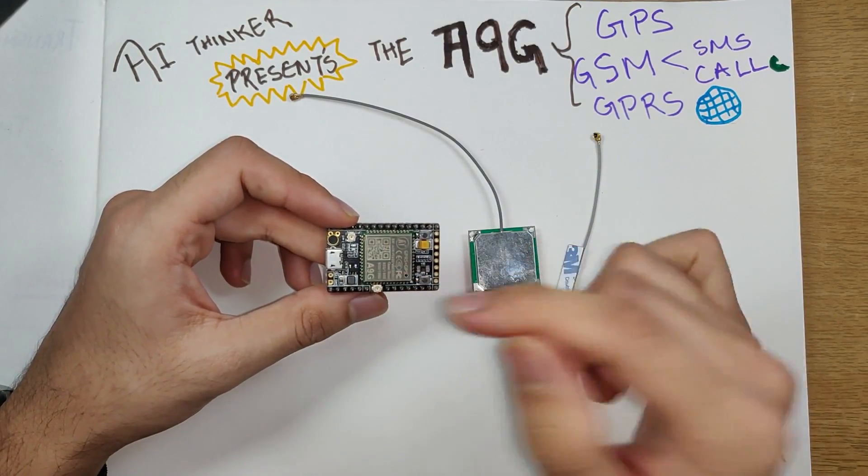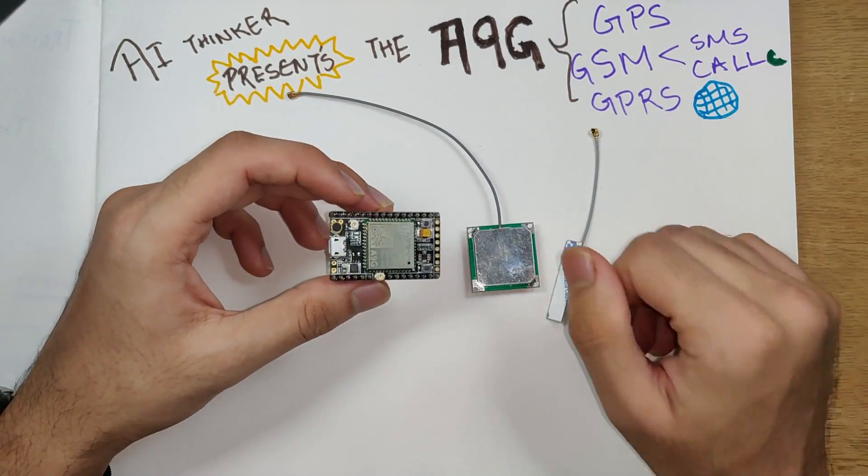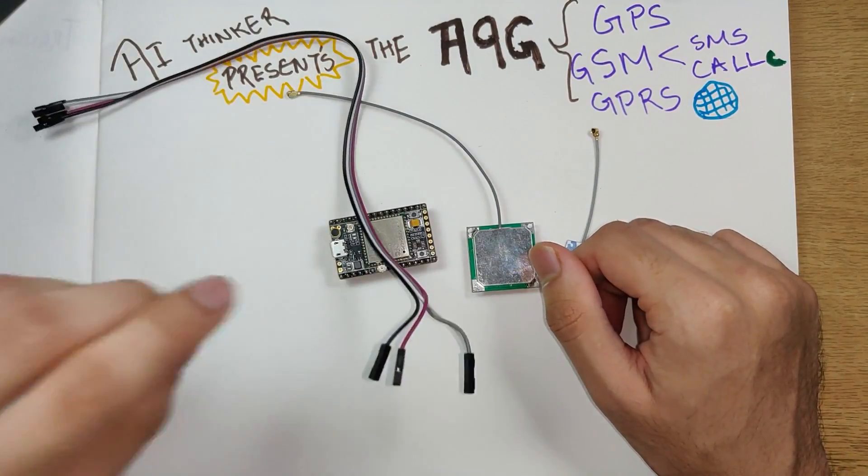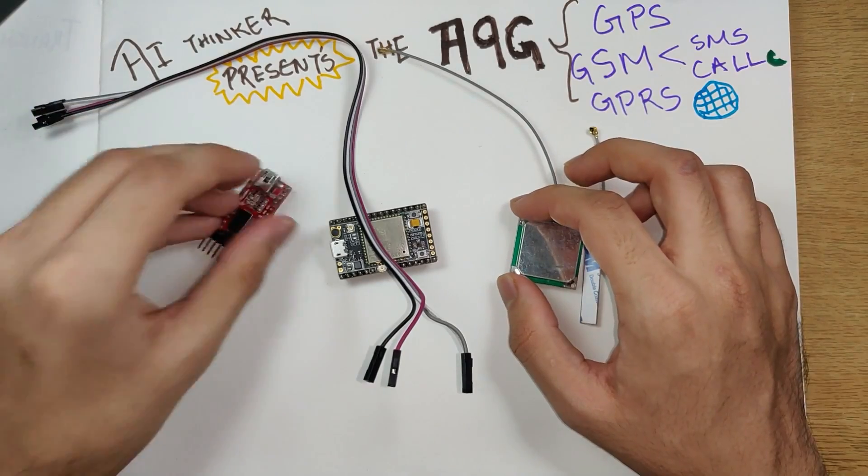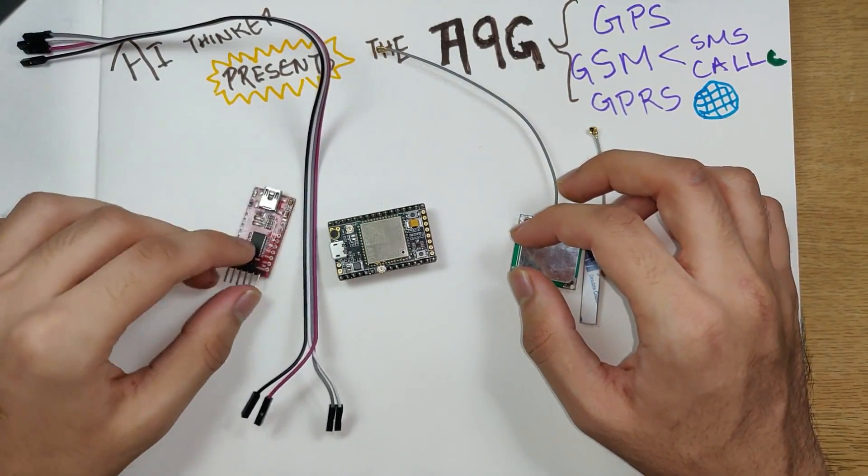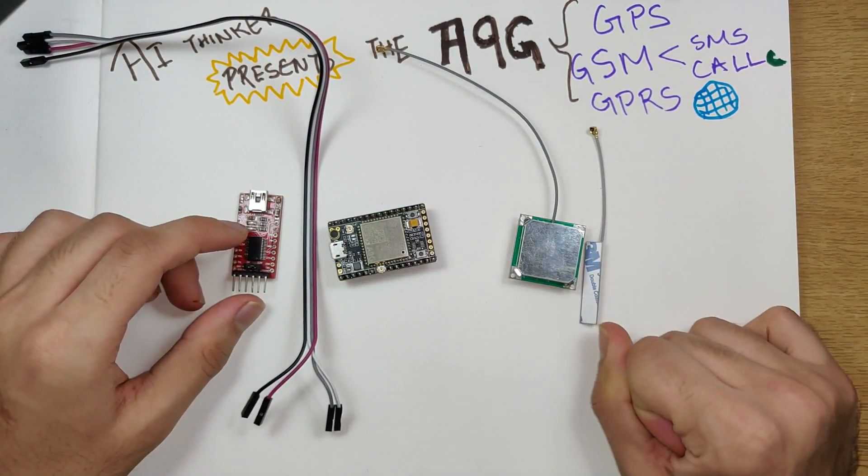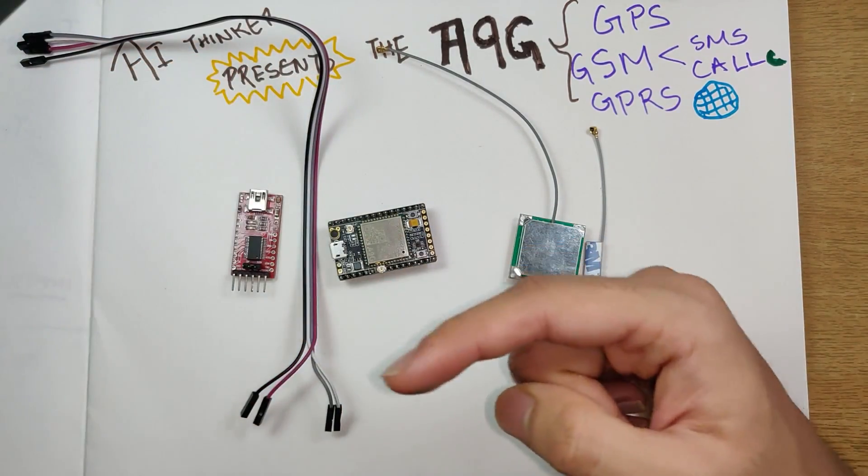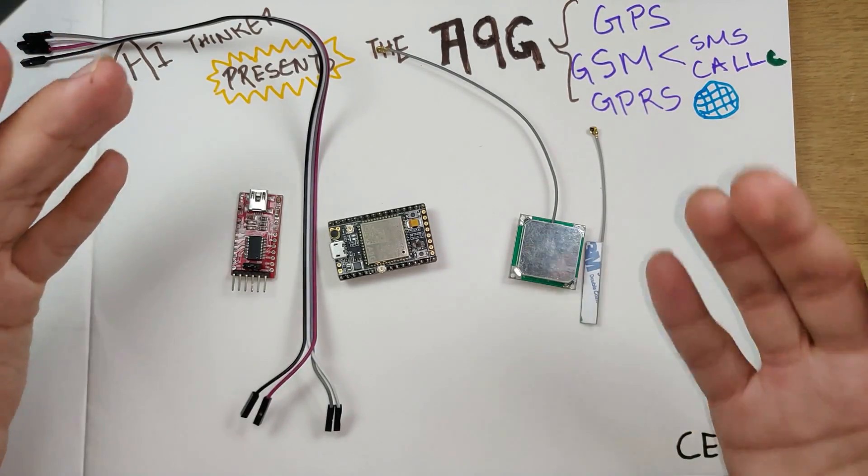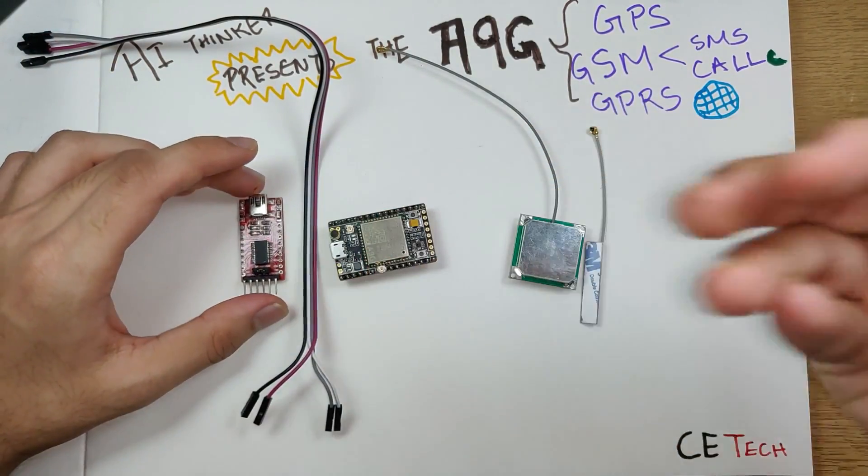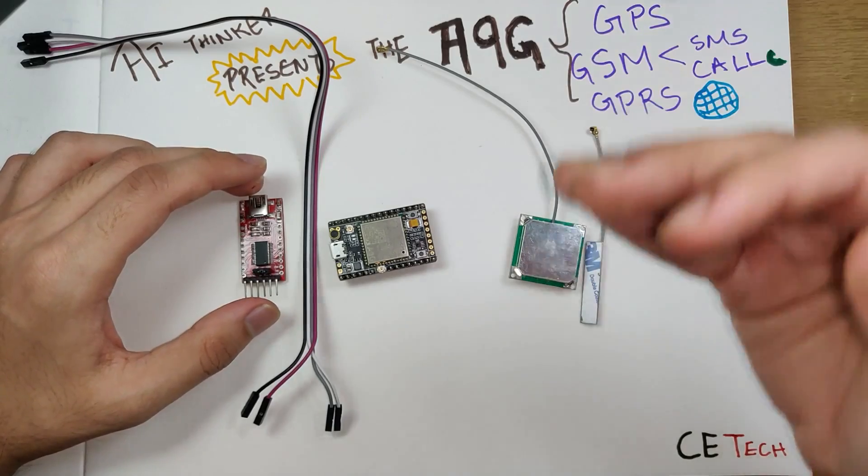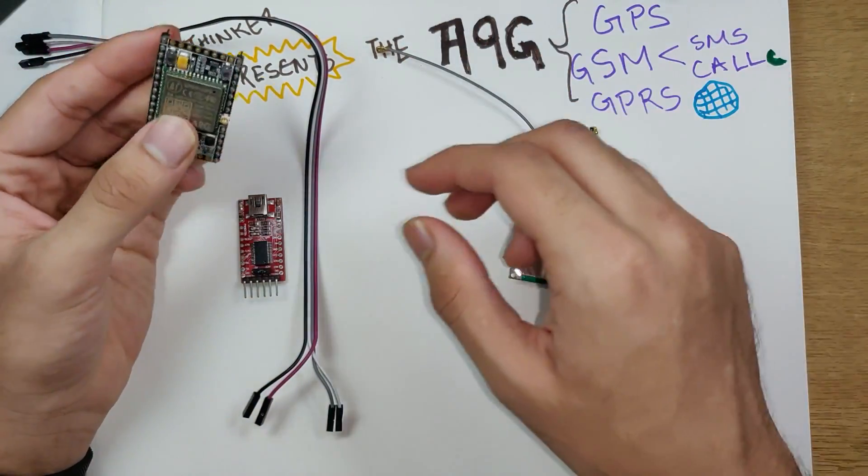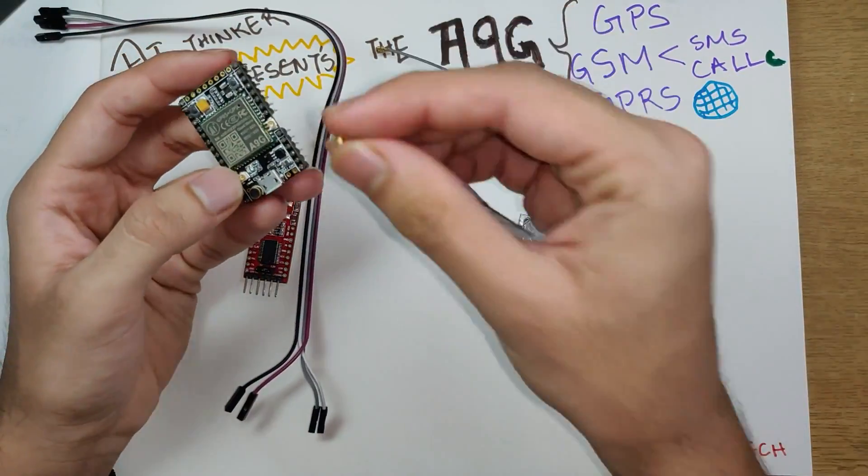There are a couple of buttons as well. One is a reset button, and this one is the power button. When you power your A9G using the USB cable, you need to keep this button pressed so that the LEDs blink. We have a couple of LEDs as well. The left one shows the GSM or GPRS status, and the one on the right shows the GPS status.